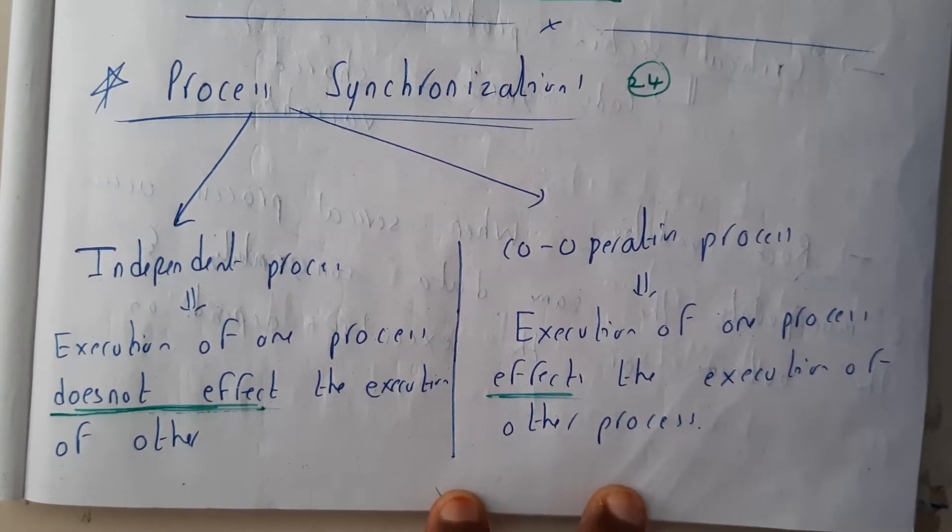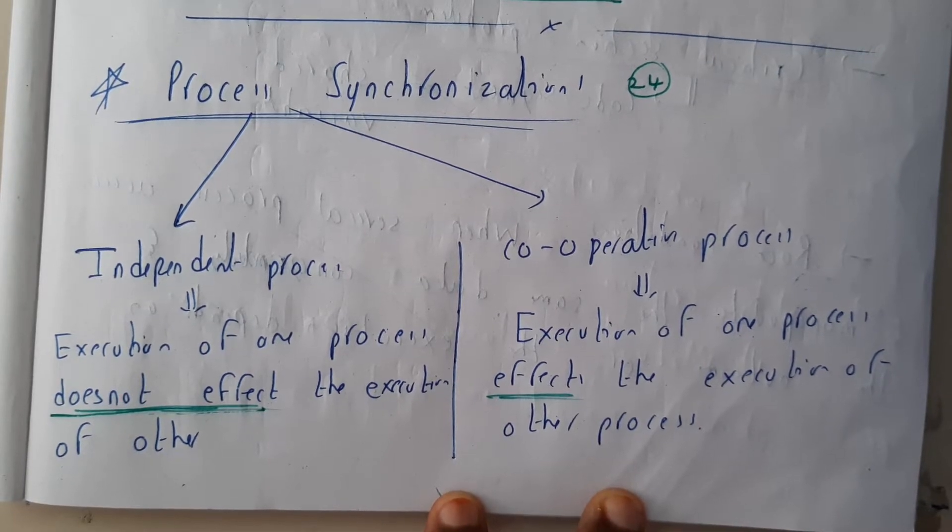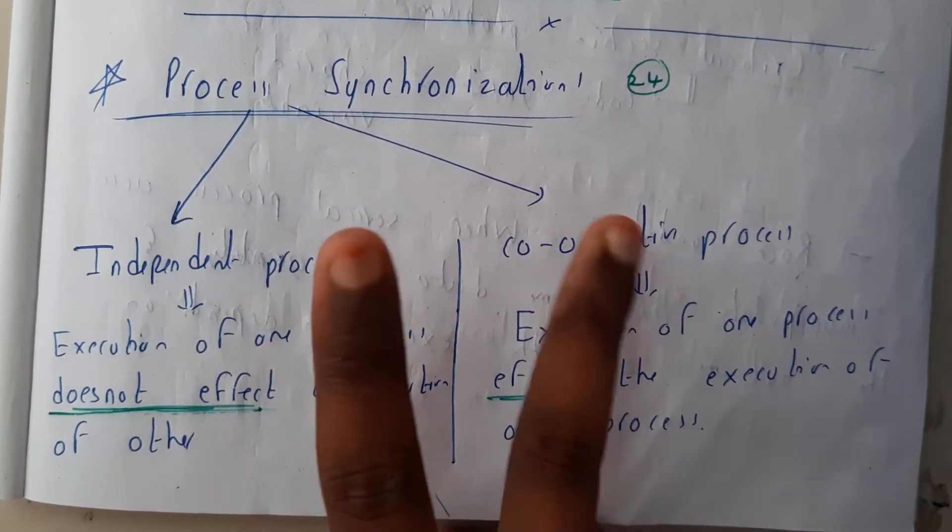So what is program? Program is a collection of data and some few lines of code. Okay, so processes are divided into two types.